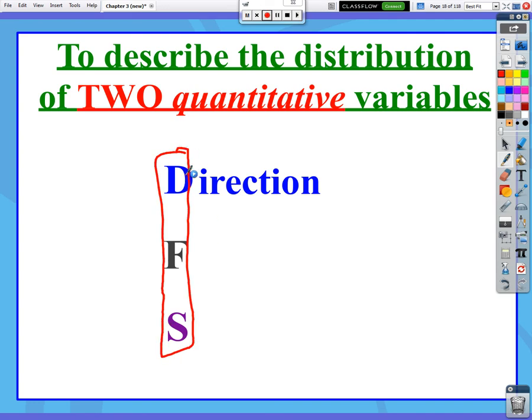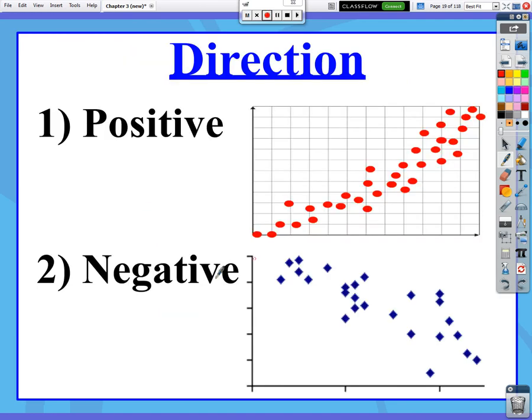The D of DFS stands for direction. Direction is pretty much going to be one of two things. We're either going to see a positive direction, or we're going to see a negative direction as things move to the right. You can also associate this with slope of a line, and that's what we'll really get into later, is the line of best fit that fits this data the best that it can.